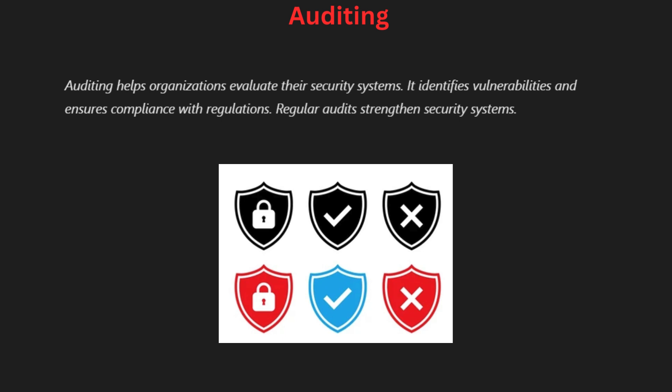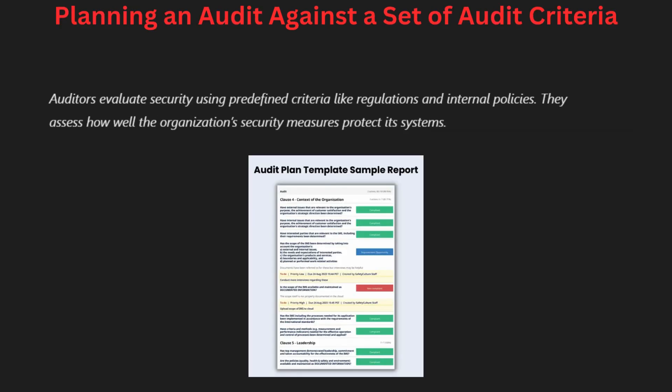Planning an audit requires establishing clear criteria to evaluate an organization's security measures. This criteria may include compliance with regulations, industry standards and internal policies. Auditors begin by identifying the specific areas of the organization that require evaluation. This planning phase is crucial for ensuring that the audit is comprehensive and focused. Auditors also determine the methods and tools they will use to collect and analyze data.